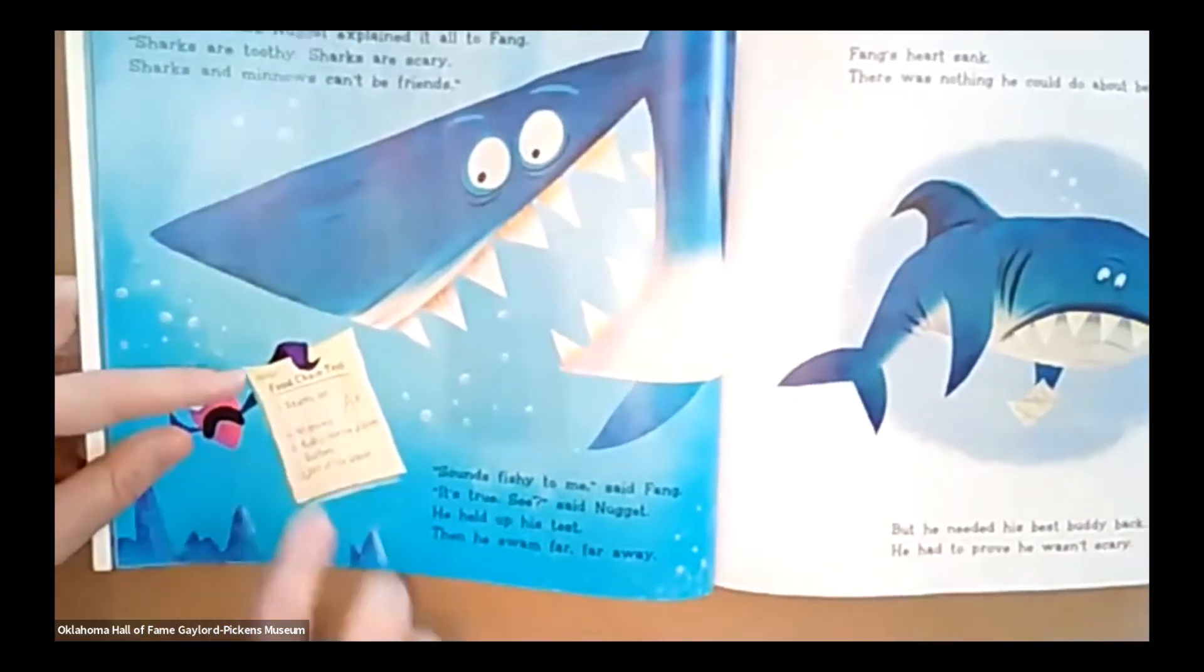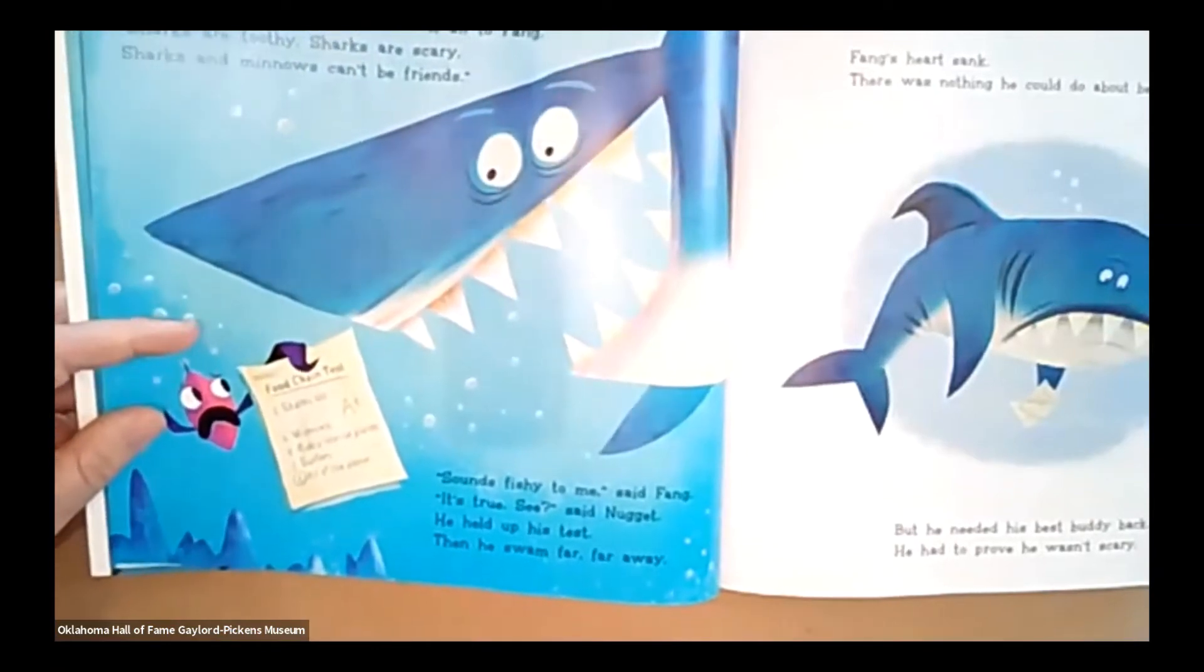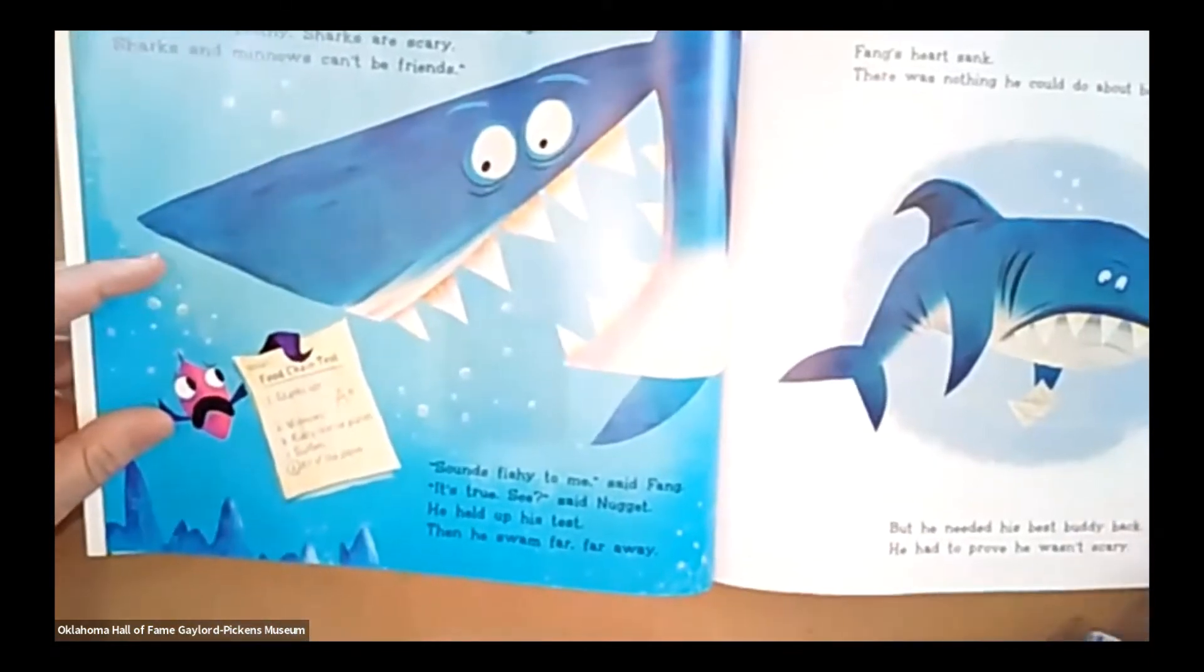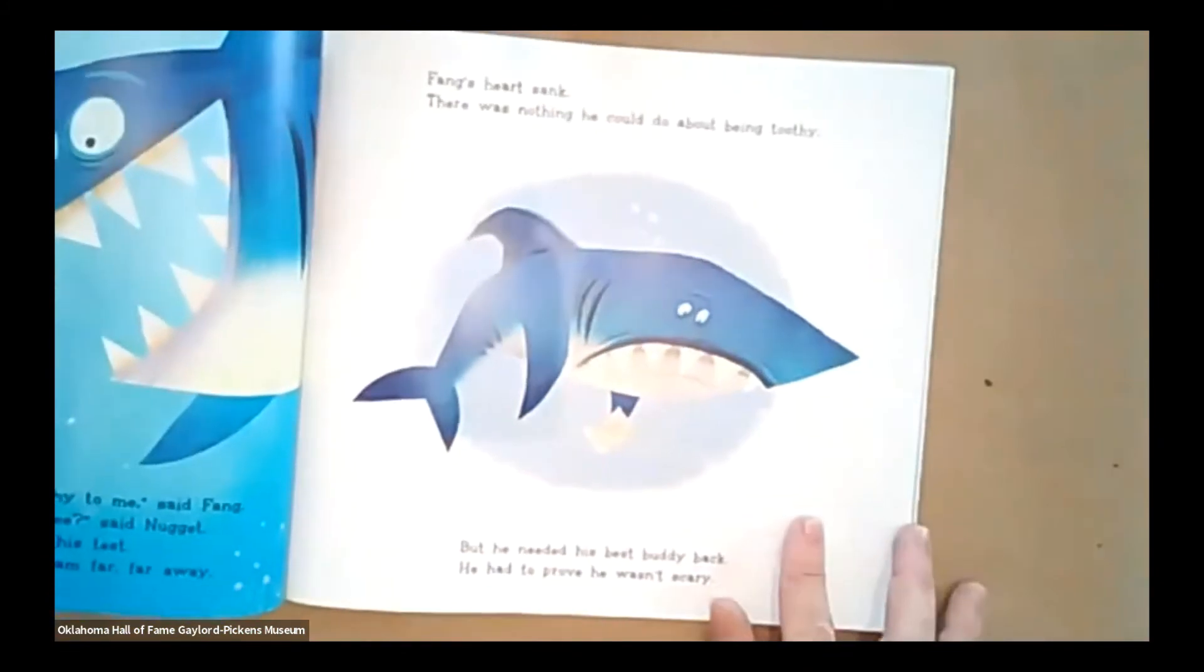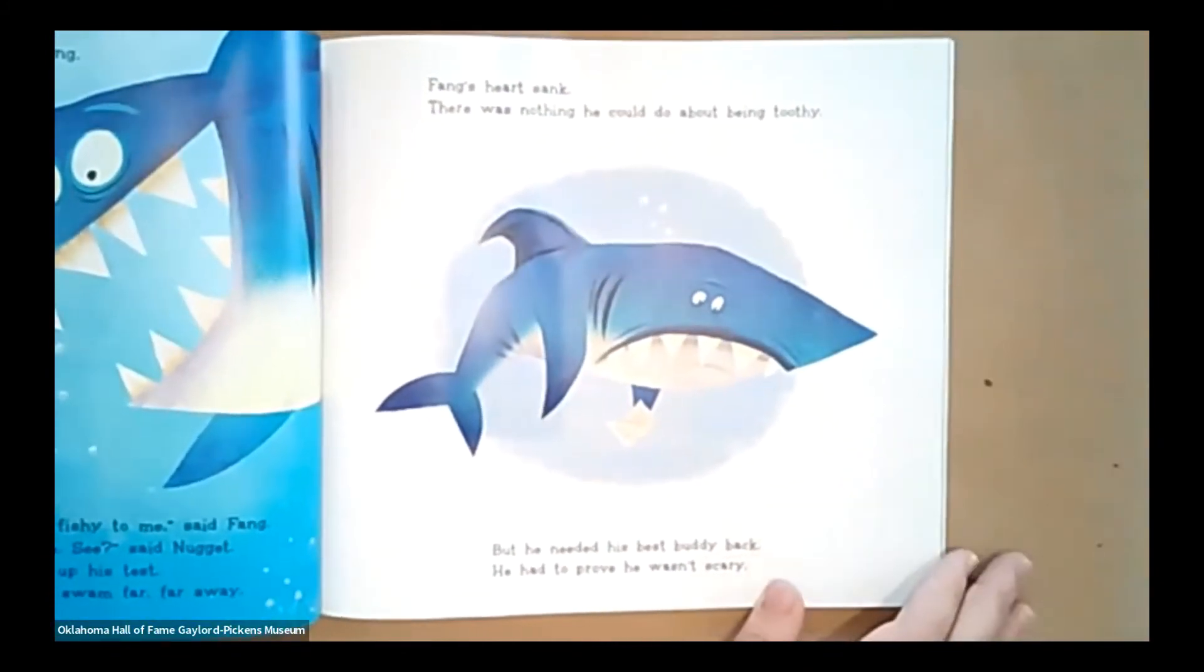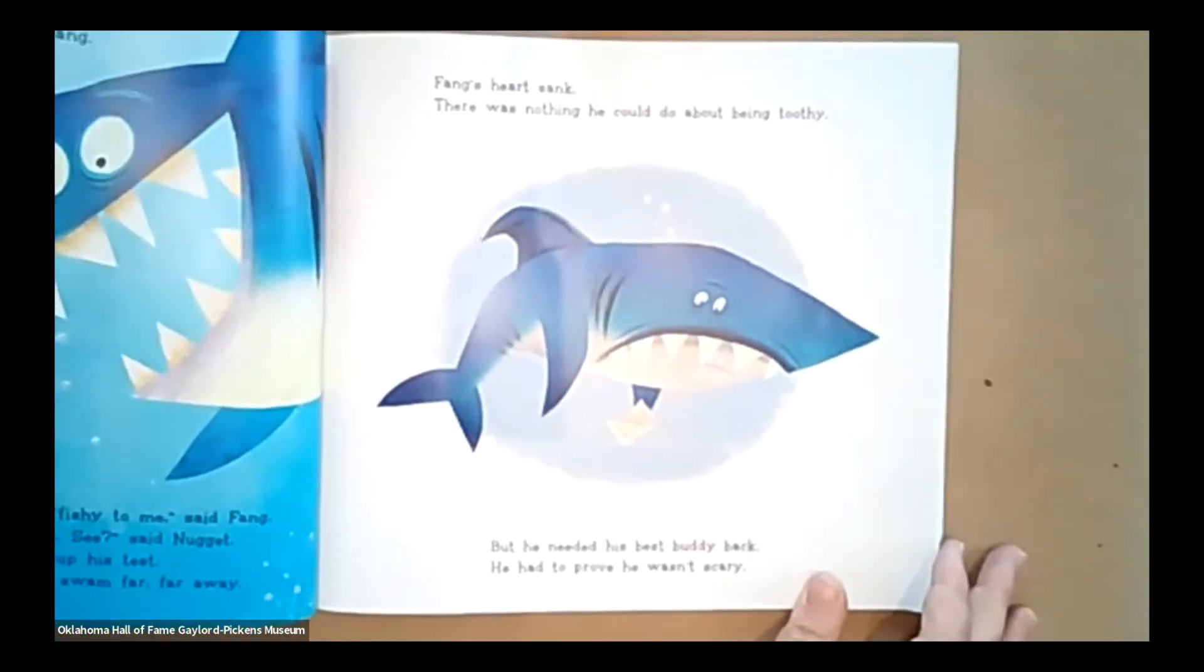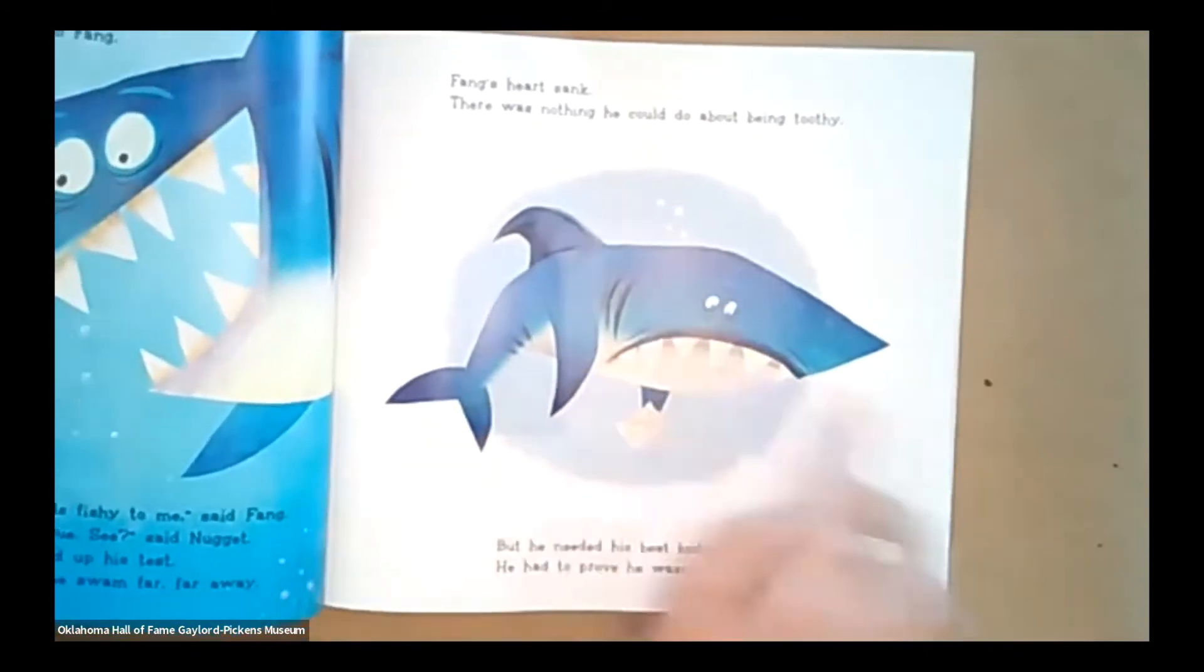It's true. See, said Nugget. He held up his test. Then he swam very far, far away. And so his test said, Sharks eat A, minnows. B, rusty license plates. C, surfers. Or D, all of the above. And he got an A plus for saying all of the above. Uh-oh. Fang's heart sank.